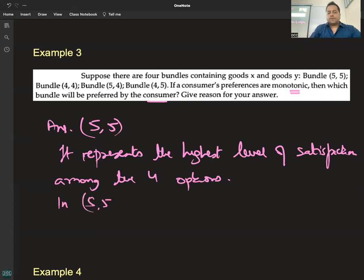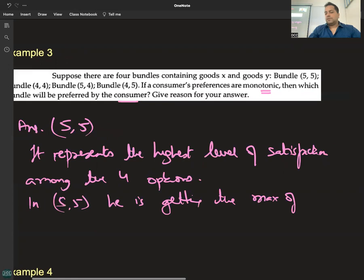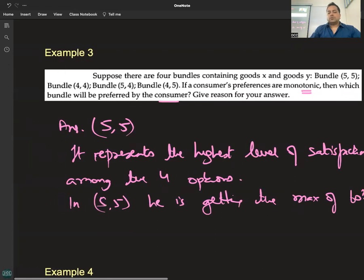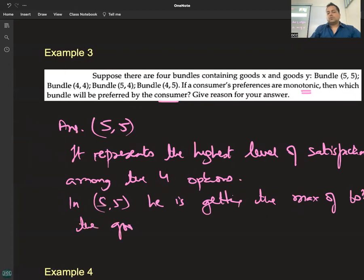In (5,5) he is getting the maximum of both goods. Consumer preferences are said to be monotonic if, when choosing a bundle, he gets more of one good and no less of the other.